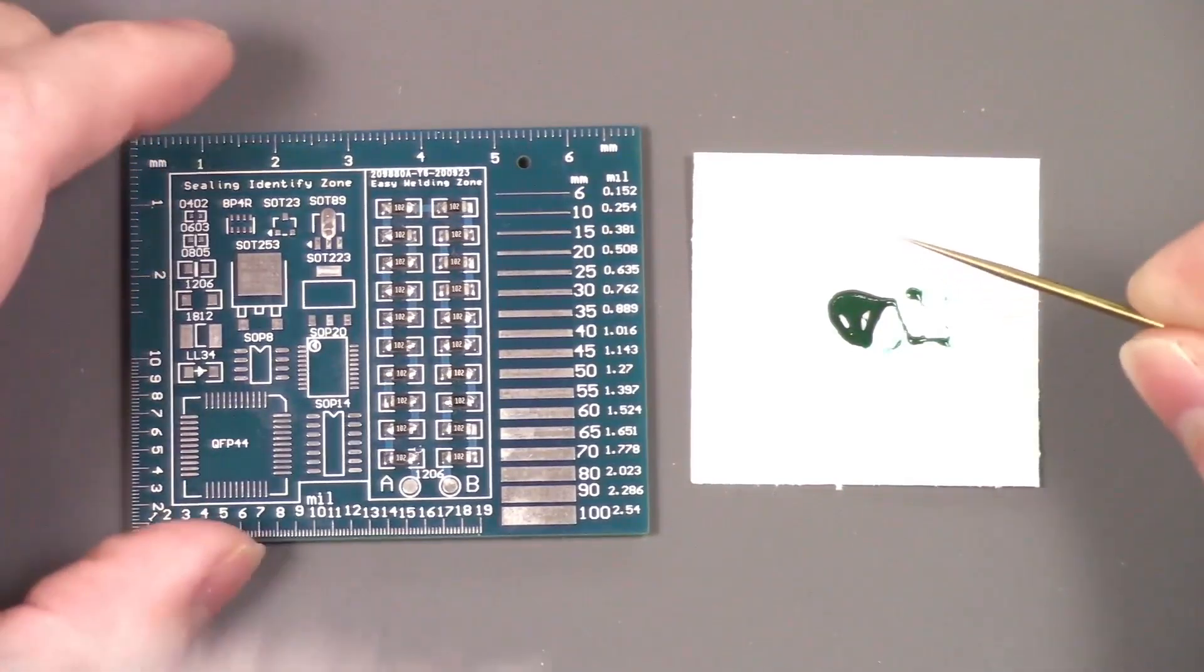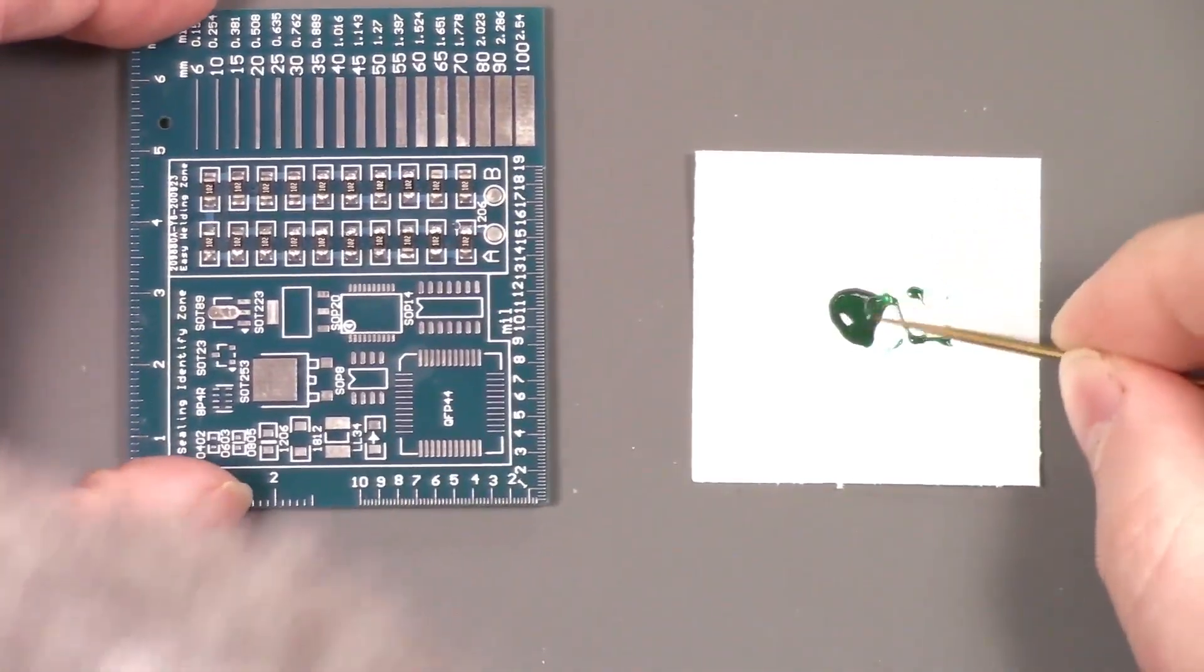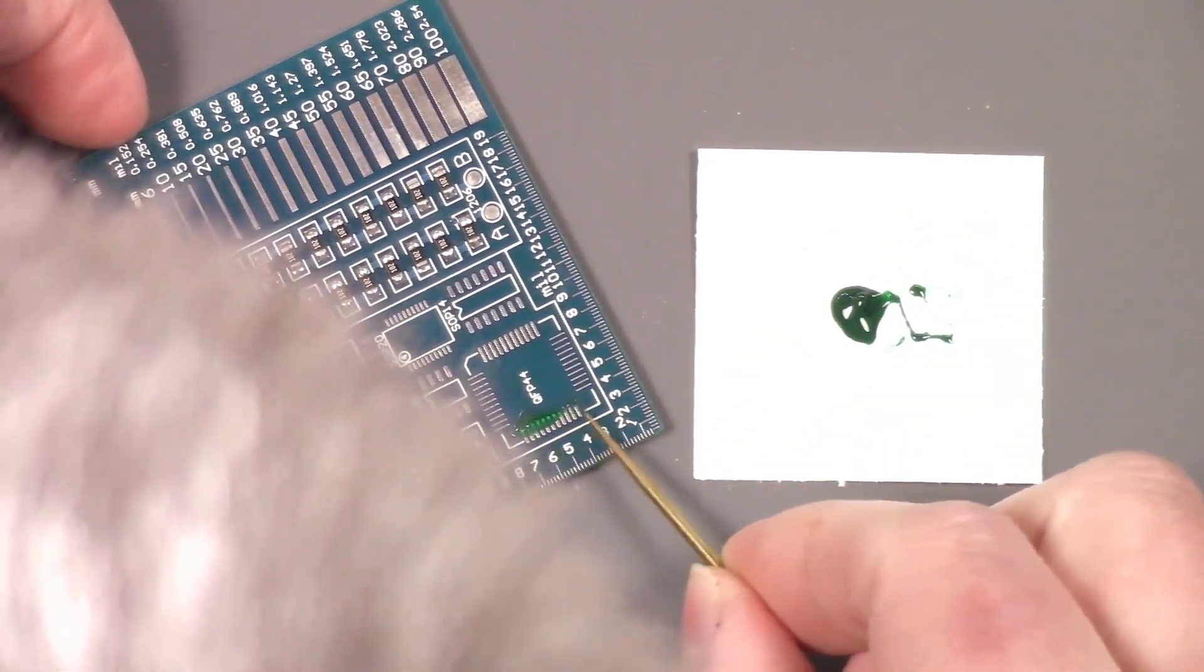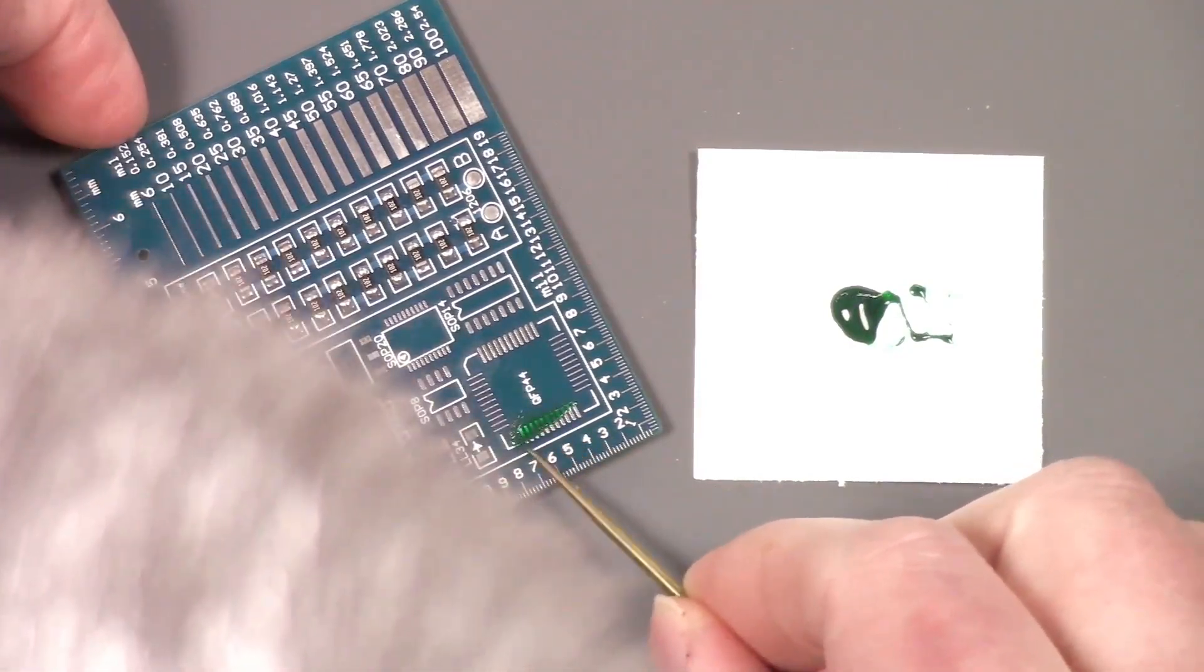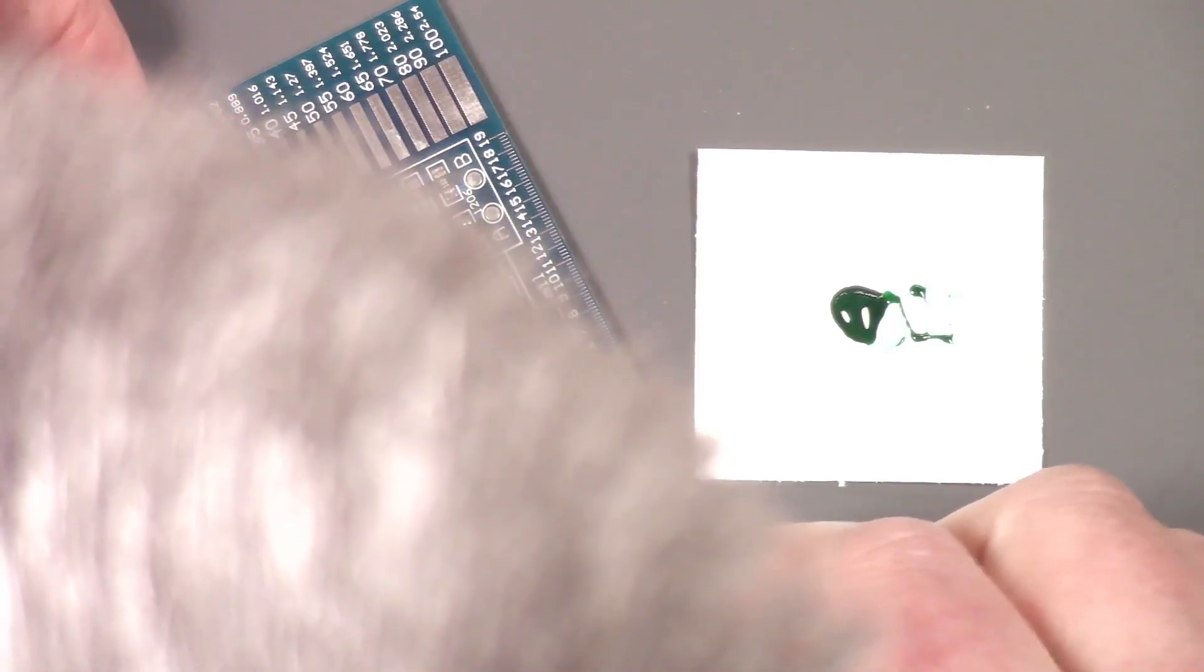So I'm going to take this and I'm just going to cover this area here, all these traces right here. And a thin coating here just to see what that looks like, see if that cures in a nice thin coat.